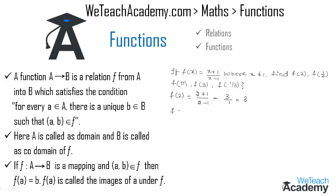Now let us find f(1/2). By replacing x with 1/2 we get (1/2 + 1)/(1/2 - 1). Taking LCM in both numerator and denominator we get (1+2)/2 divided by (1-2)/2. The 2's cancel and we get 3/(-1) = -3. So f(1/2) = -3.